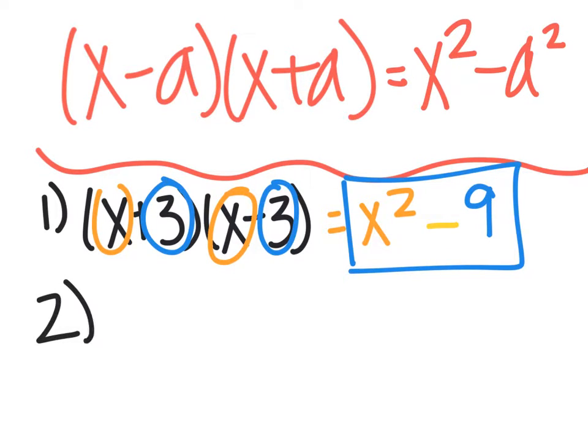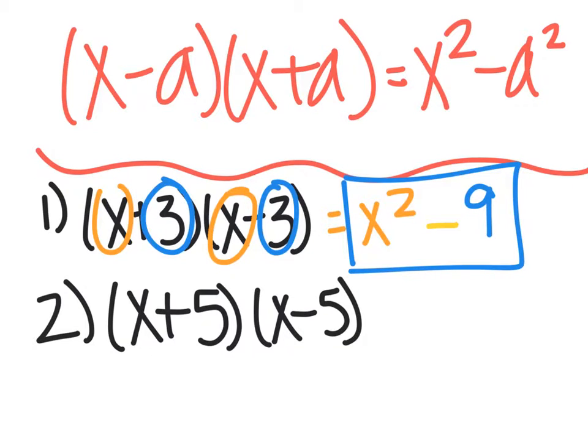If I had (x+5)(x-5), the answer would be x²-25.